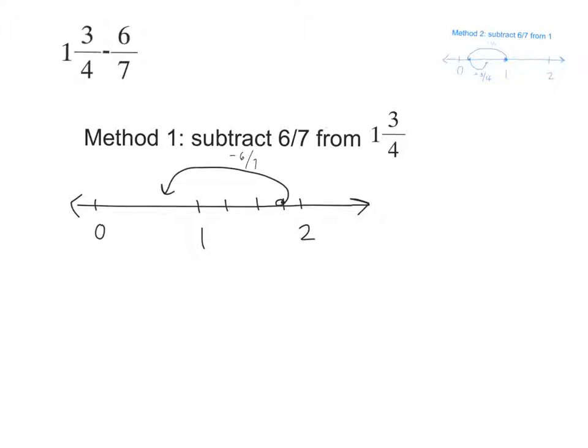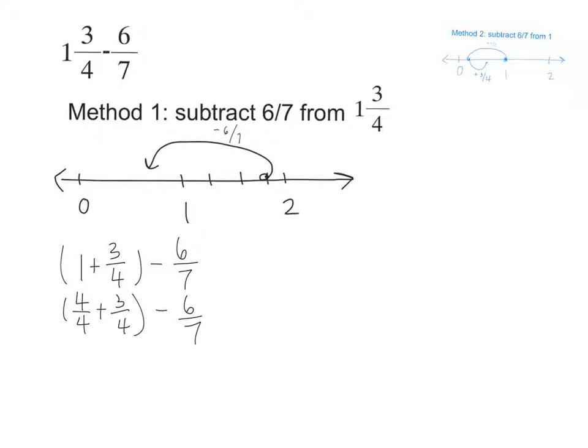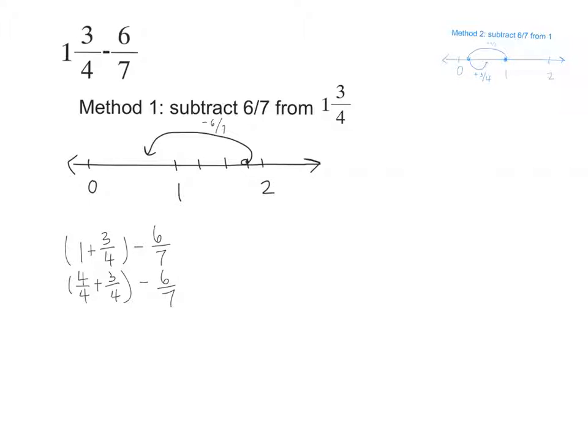Method 1 has us subtracting 6 sevenths directly from 1 and 3 fourths. So we can think of 1 and 3 fourths as 1 plus 3 fourths. And then we have to subtract 6 sevenths from that. What's another way to write 1 that might make sense here? Jack? 4 fourths. Yeah, we can say that 1 is the same thing as 4 fourths plus 3 fourths. And then, of course, we have to subtract 6 sevenths. If I have 4 fourths, I'm going to add another 3 fourths. Ella, how many fourths do I have altogether? 7 fourths. 7 fourths. Good. So let's write 7 fourths minus 6 sevenths.